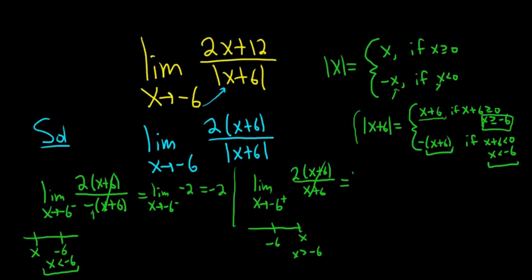So this is equal to the limit as x approaches negative 6 from the right, and that's 2. And now you can drop the limit sign and that's equal to 2.